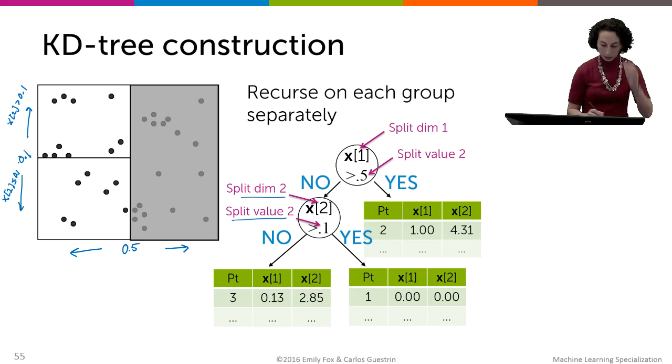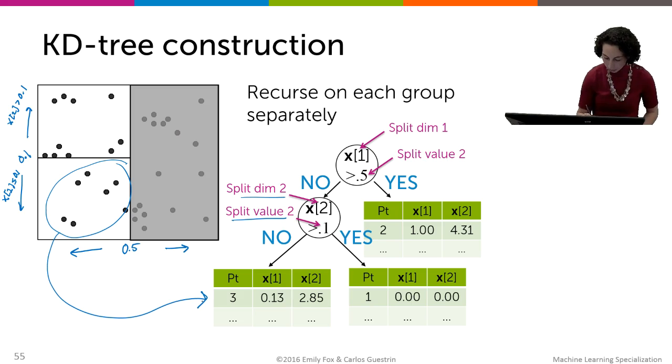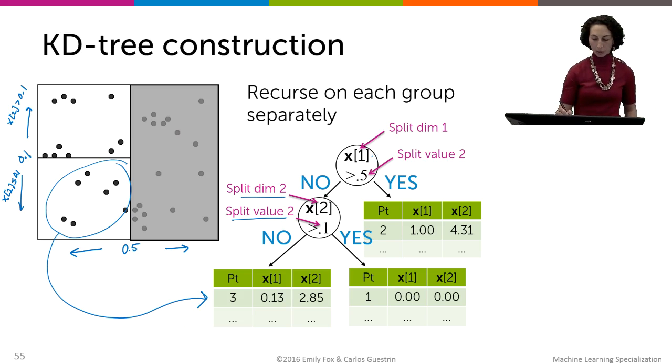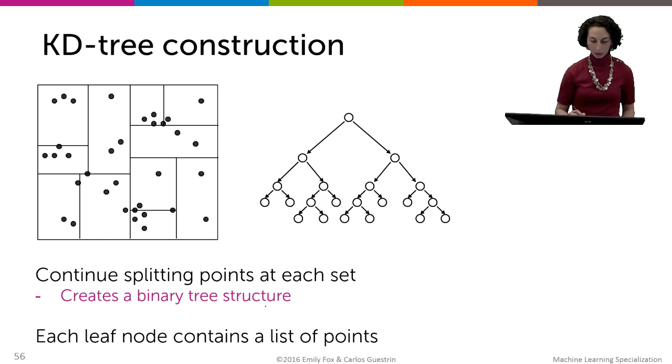And so to be clear, all of these points here will appear in this list here. They're the ones where x1 is less than 0.5, they fall on the left-hand side of this first vertical line. And they're also points where x2, that second feature dimension, is less than 0.1. So they fall below that horizontal cut that we made. So the answers to these questions were no, no. And so they fall into this table here.